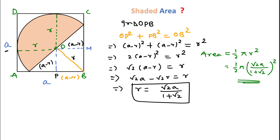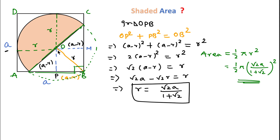Now, why is OB equal to r? If we connect both endpoints of the diameter to point B, it forms a full circle, and B lies on the circle. A triangle inscribed in a semicircle with the diameter as one side is always a right angle triangle — and since each angle of the square is 90°, this confirms B lies on the circle. Therefore OB is indeed the radius r. Thanks for watching — please like, share, and subscribe.